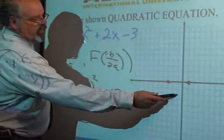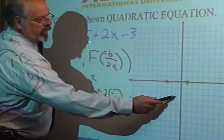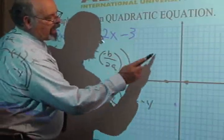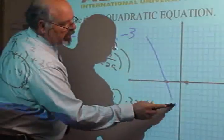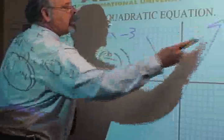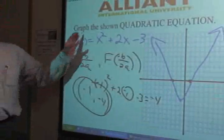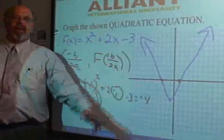Negative 1 is 1 over. Negative 4 is 4 down. 1, 2, 3, 4. There's your vertex. Try to make it look like a u as much as possible. There is your quadratic equation graph. That is a parabola.